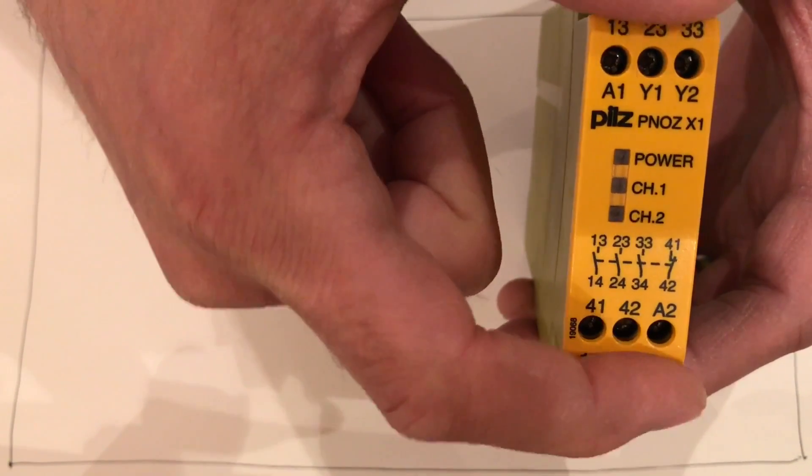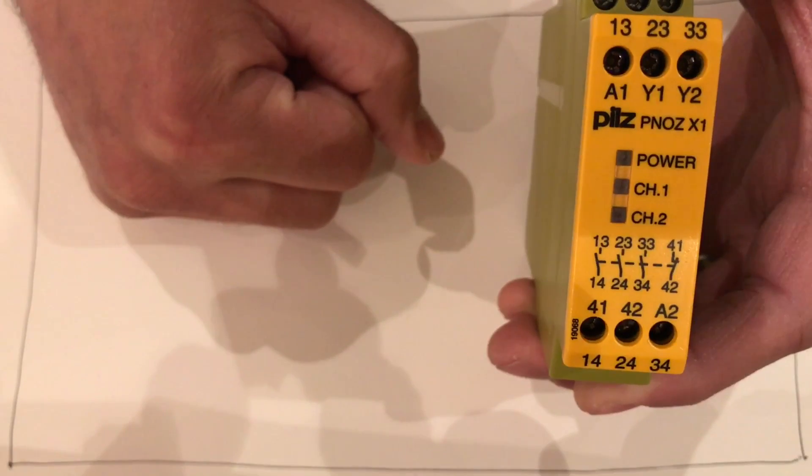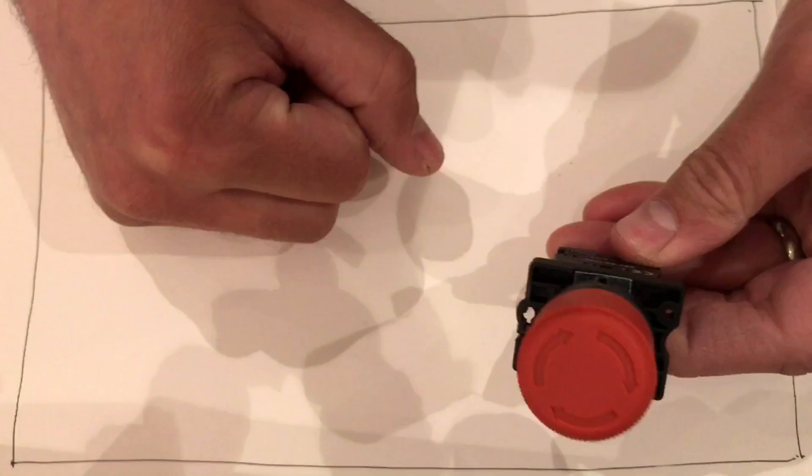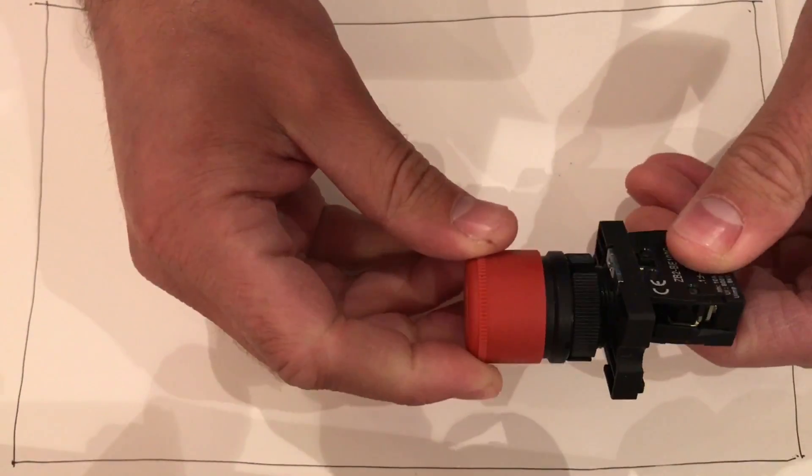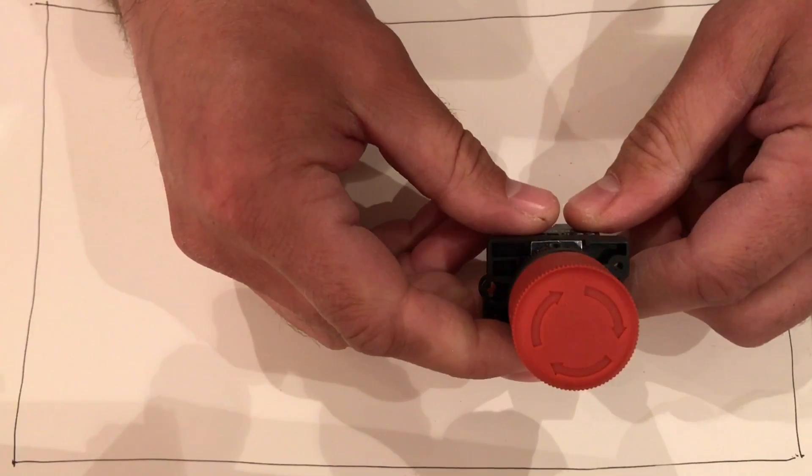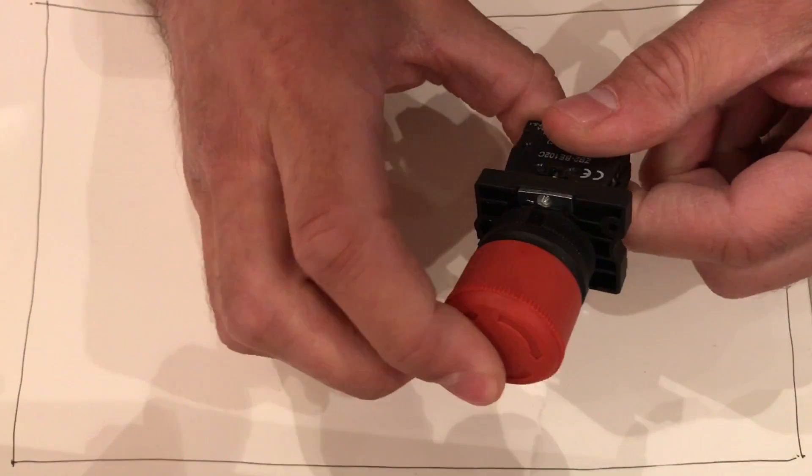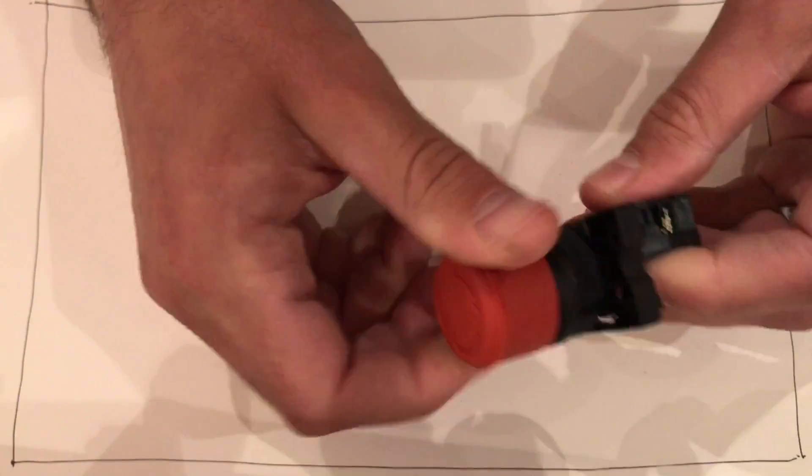I've got a couple of e-stop buttons on the circuit - one on the panel and one on the machine. These are the type that you reset by twisting them.